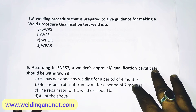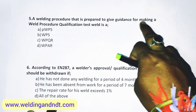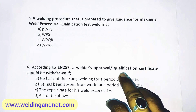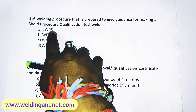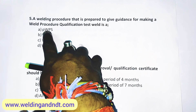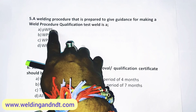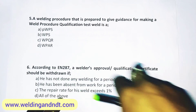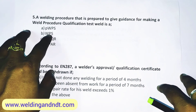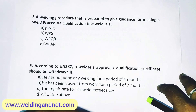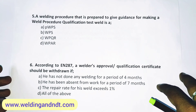Question number 5: A welding procedure that is prepared to give guidance for making a weld procedure qualification test weld is a PWPS. PWPS is written at the very start because it gives preliminary guidance for making the final weld procedure qualification test. After writing the PWPS, you start the welding of the test coupon, then other activities are done to qualify that PWPS.